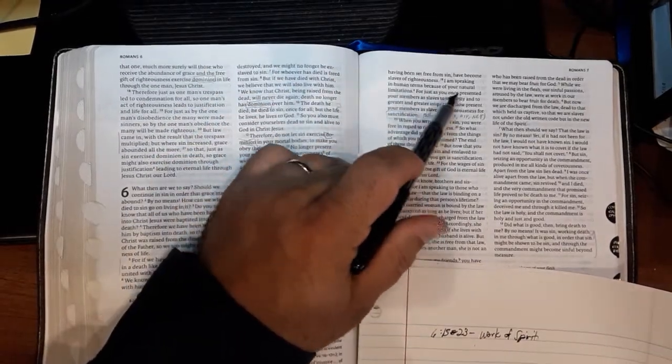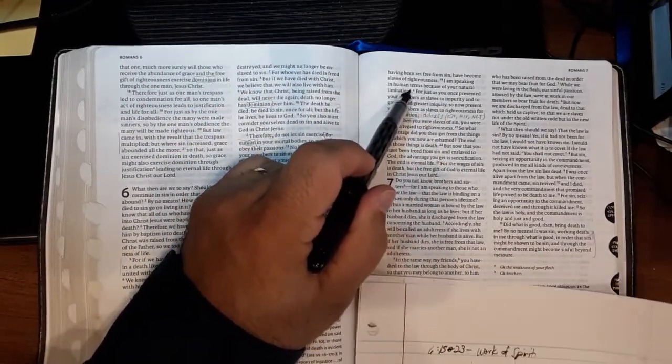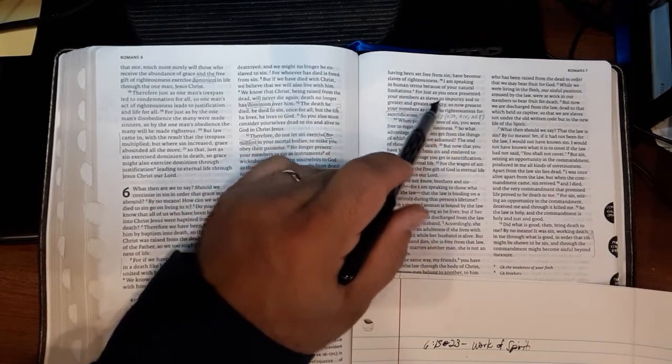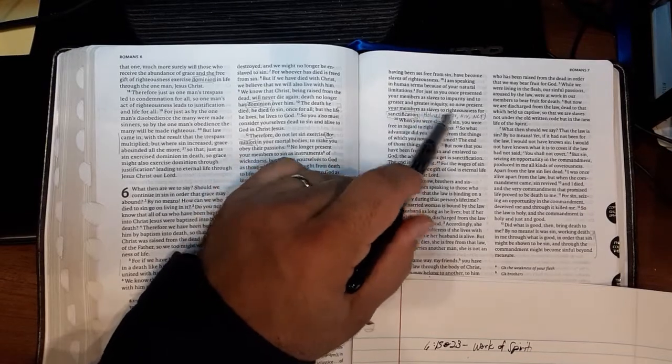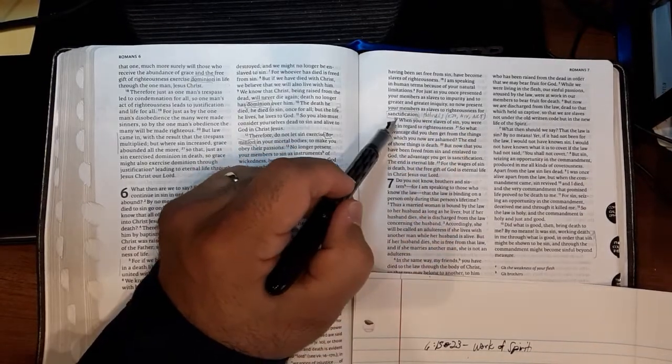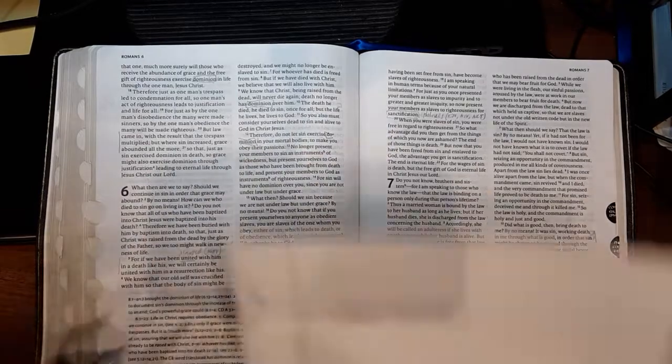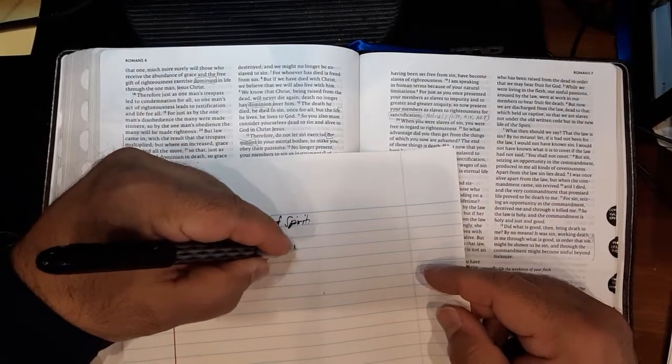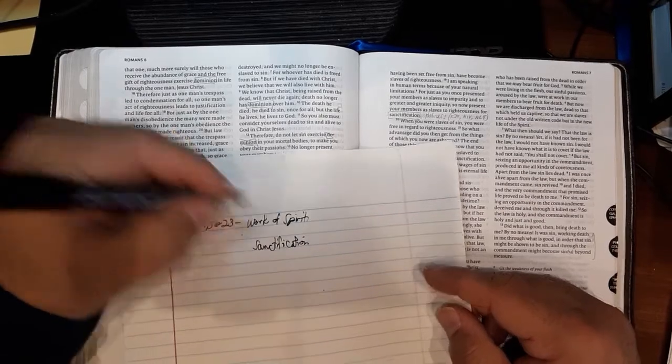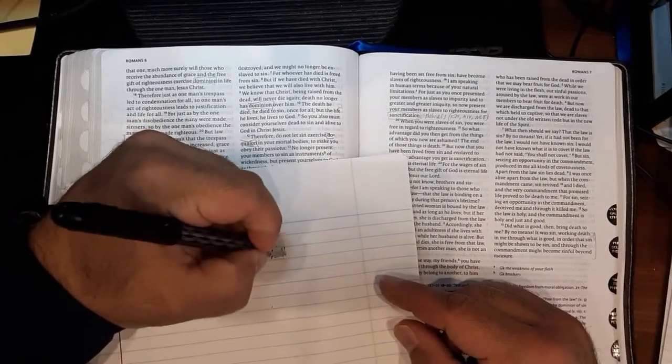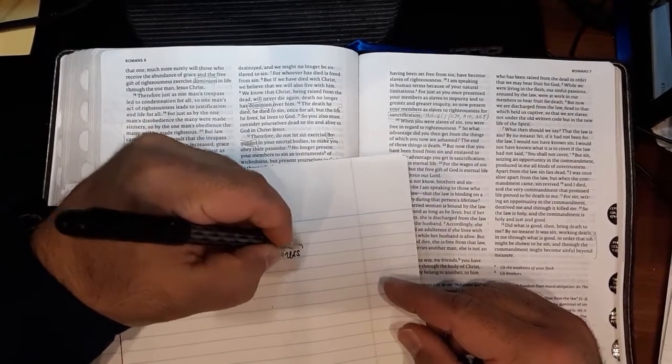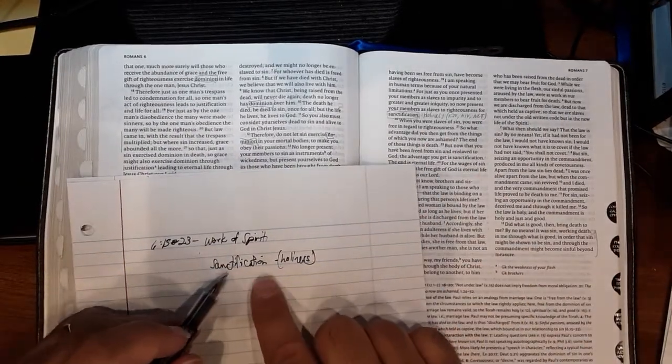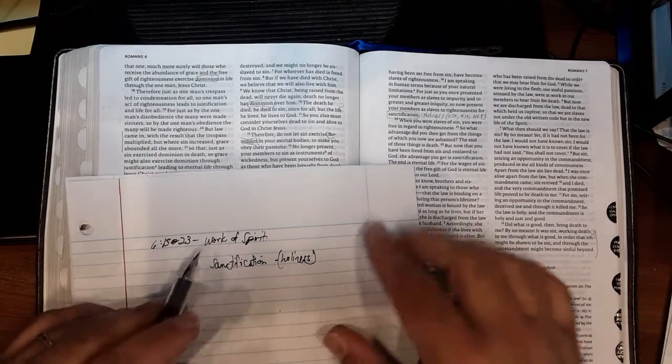I'm speaking in human terms because of your natural limitations or weakness of flesh. For just as you once presented your members as slaves to impurity and to greater and greater iniquity, so now present your members as slaves to righteousness for sanctification. Sanctification. It's a new word he's introducing here. The root word is that of holiness. If you go to your King James version, NIV and New Living Translation, the word is holiness, but it's the same word family as sanctification.